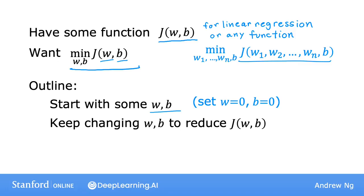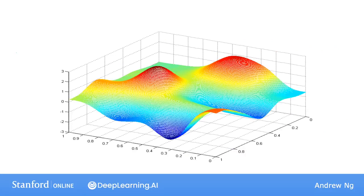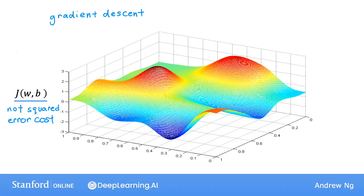To try to reduce the cost J(w,b) until hopefully J settles at or near a minimum. One thing I should note is that for some functions J that may not be a bow shape or a hammock shape, it is possible for there to be more than one possible minimum. Let's take a look at an example of a more complex surface plot J to see what gradient descent is doing.